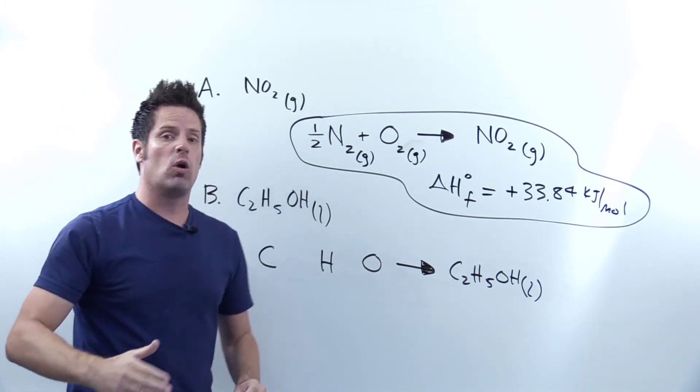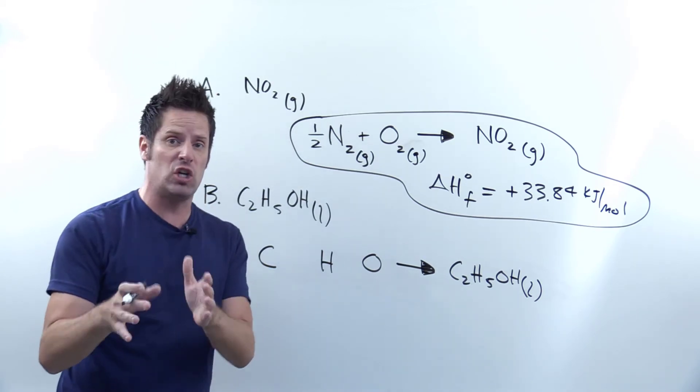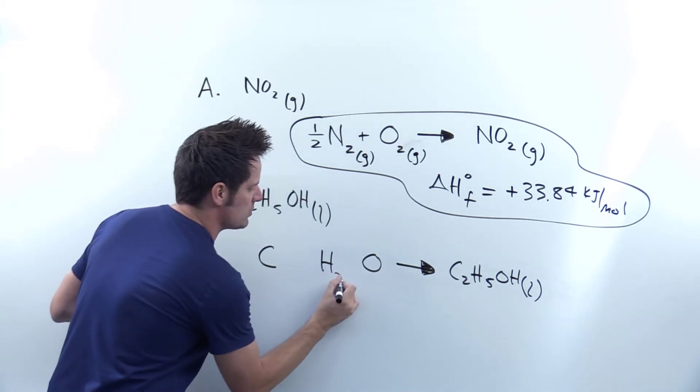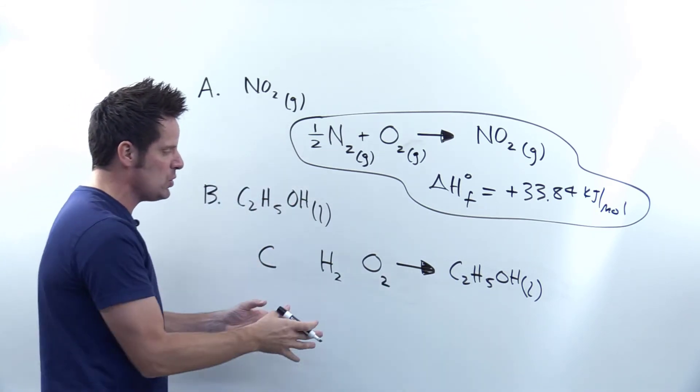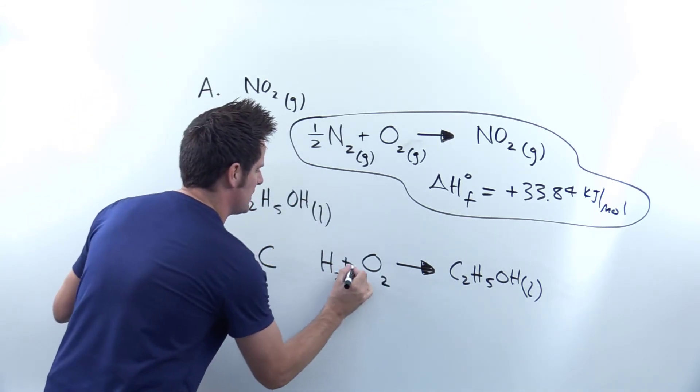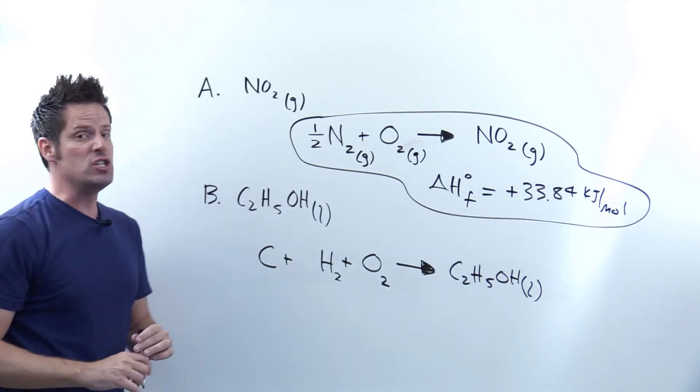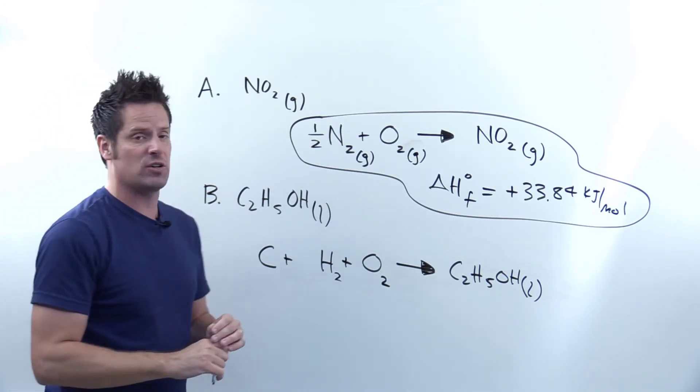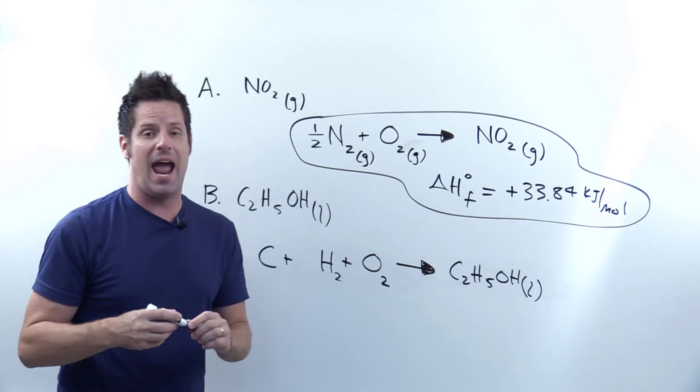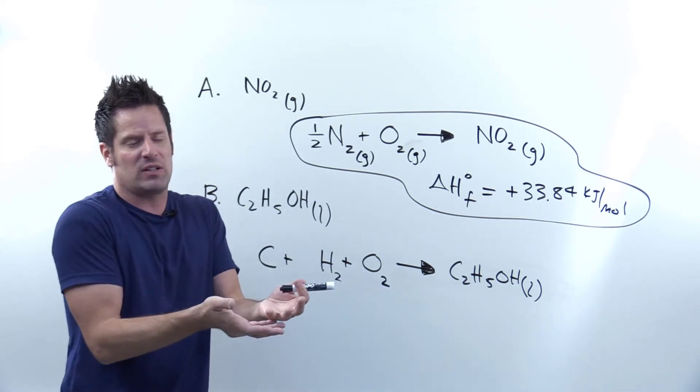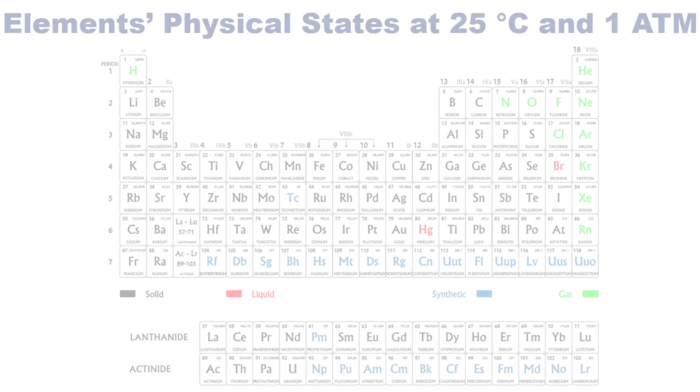But for any of the elements that are one of those seven diatomics, I have to write a two. As you'll note, hydrogen is one of the seven diatomics and oxygen is one of the seven diatomics. So I'm going to write down little twos next to them. Now I'll write pluses between each element. Carbon is not one of the seven diatomics, so I just leave it as the letter C.